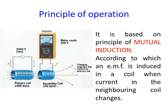We can see the primary coil and secondary coil. We can change the number of turns, and based on the number of turns we will get the output voltage. This is based on the principle of mutual induction, according to which an EMF is induced in a coil when current in the neighboring coil changes. There are two types of induced EMF: dynamically induced EMF, where either the coil or magnetic field is in motion, and statically induced EMF, where there is no physical motion.